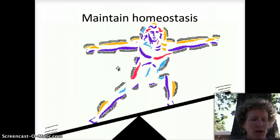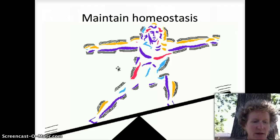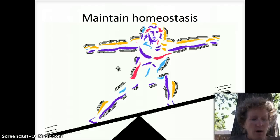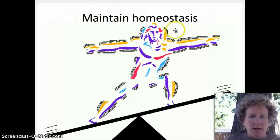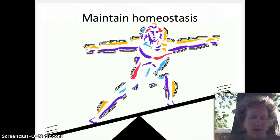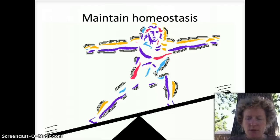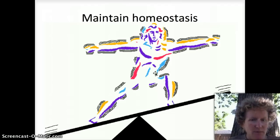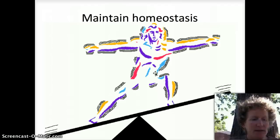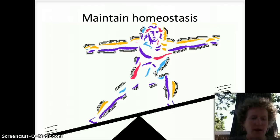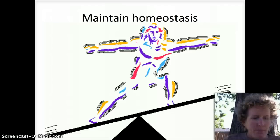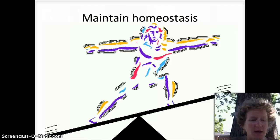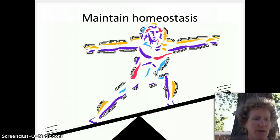Maintaining homeostasis means trying to maintain a balance of different qualities in the body. Humans try to maintain blood sugar — it goes up after we eat because we absorb glucose from our food, and it goes down if we haven't eaten in a while. Our body regulates itself with insulin and glucagon to maintain a normal level of sugar. Same with temperature — we sweat if we're hot and shiver if we're cold, trying to maintain a stable temperature.